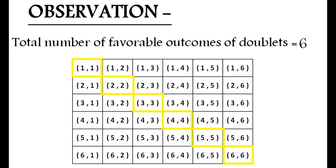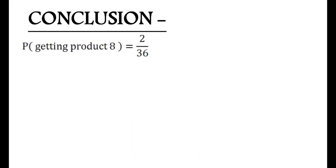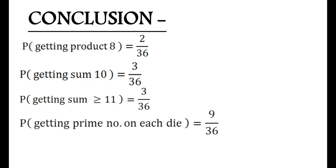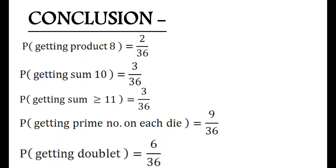From the previous observations we can conclude that the probability of getting a product of 8 is 2/36. The probability of getting a sum of 10 is 3/36. The probability of getting a sum greater than or equal to 11 is 3/36. The probability of getting prime numbers on each die is 9/36. And the probability of getting a doublet is 6/36.